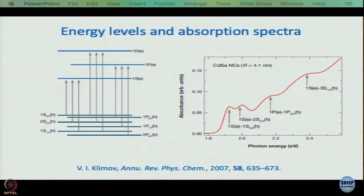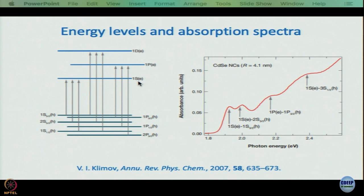If you think of transitions between these levels: one transition is 1s hole and 1s electron. Written formally, it is 1Se–1S(3/2)h. You do not read the dash; you call it 1Se 1S(3/2) hole. This is the lowest energy transition in the energy levels drawn here. The hole is in the 1S(3/2) level and the electron is in the 1S level.